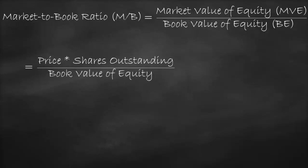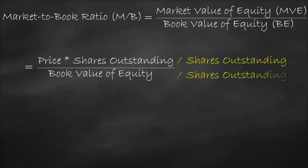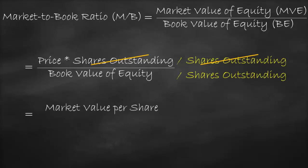We can divide both the numerator and the denominator by shares outstanding. In the numerator, shares outstanding will offset shares outstanding. In the denominator, the book value of equity divided by shares outstanding refers to the book value per share. Thus, the market-to-book ratio will be the share price, which is also called the market value per share, divided by the book value per share.